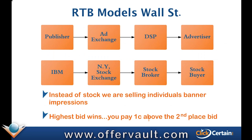The highest bid wins. It's an auction and you pay one cent above the second place bid. So if Mark bids 50 cents and I bid a dollar, I win but I pay 51 cents. Now you bid on a CPM basis. CPM is cost per thousand — M in Roman numerals is a thousand. So I pay one one-thousandth of 51 cents for that single impression.